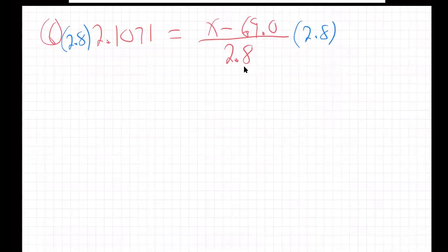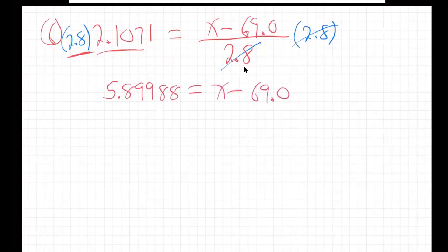Remember, when solving equations, getting an x alone, you always have to do the opposite. So the opposite of dividing by 2.8 is multiplying, that cancels it out. And then on the other side, just use your calculator, 2.8 times 2.1071. And I'm getting 5.89988 equals x minus 69.0.